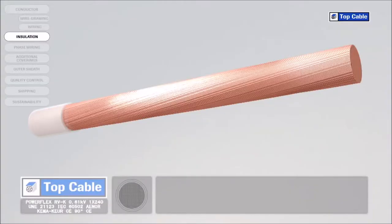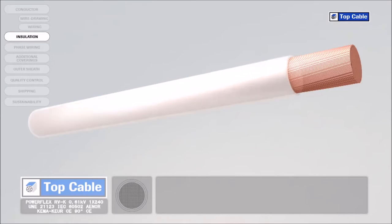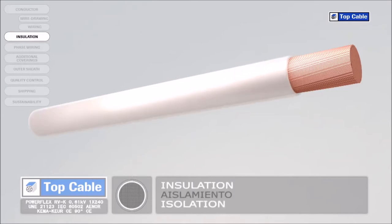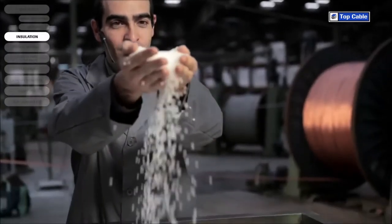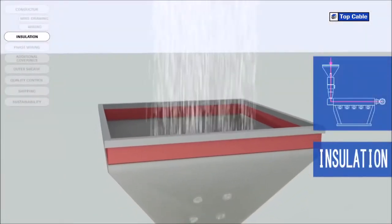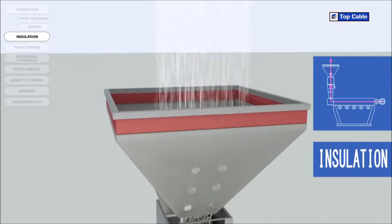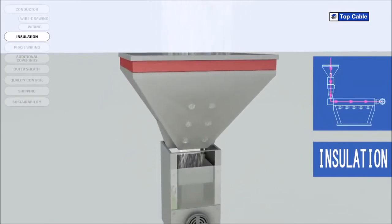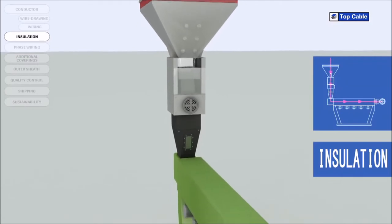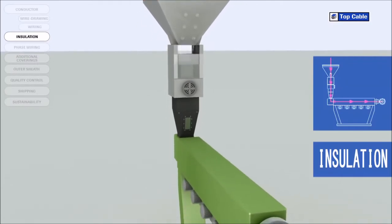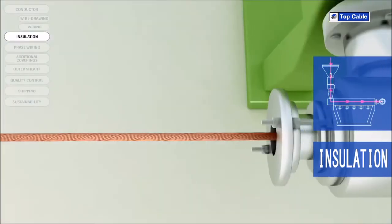The next process in the manufacture of electrical cables is the insulation. This is when we place an insulating cover over the conductor to prevent current leakages. In this process, the insulating material is added by a process of extrusion at high temperature. The insulation ensures there are no current leakages. Several insulating materials may be used — PVC, EPR, XLPE, etc.